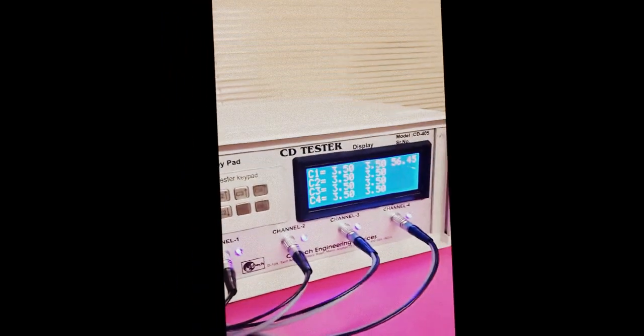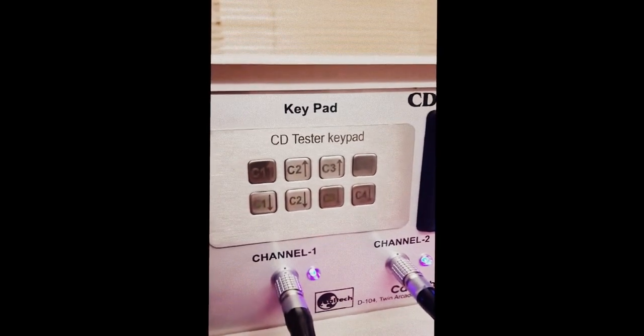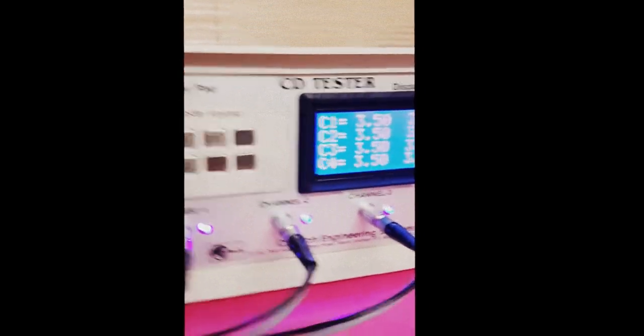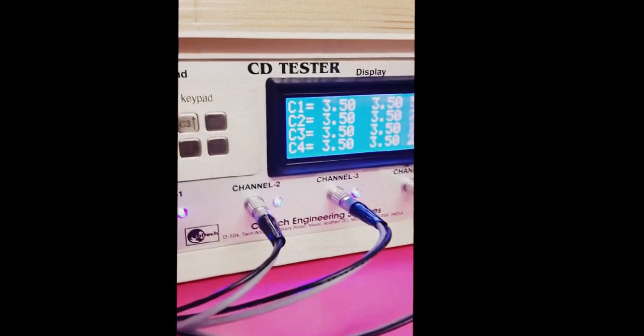This is the cathodic disbandment tester model CD405. It has a keypad for selecting voltage from 0 to 4 volts, and 4 channels can be set independently from 1 to 4 channels at a time.